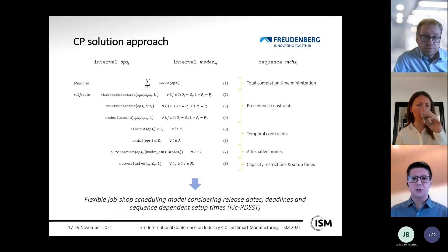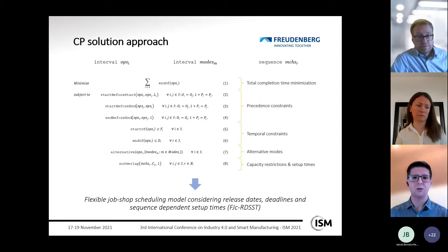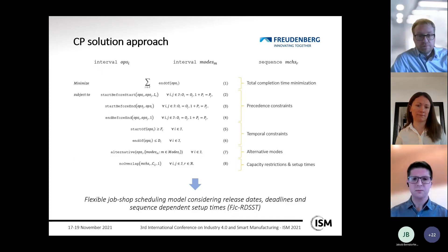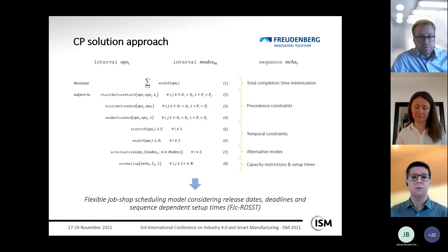Conditions two, three, and four model precedence constraints, ensuring the temporal relationships between the start and end times of activities within one order. Restrictions five and six represent temporal constraints incorporating the release dates and deadlines into the model. Constraint seven ensures alternative modes — for each activity, one or more resources on which it can be processed exist, and exactly one alternative resource must be selected for every activity.